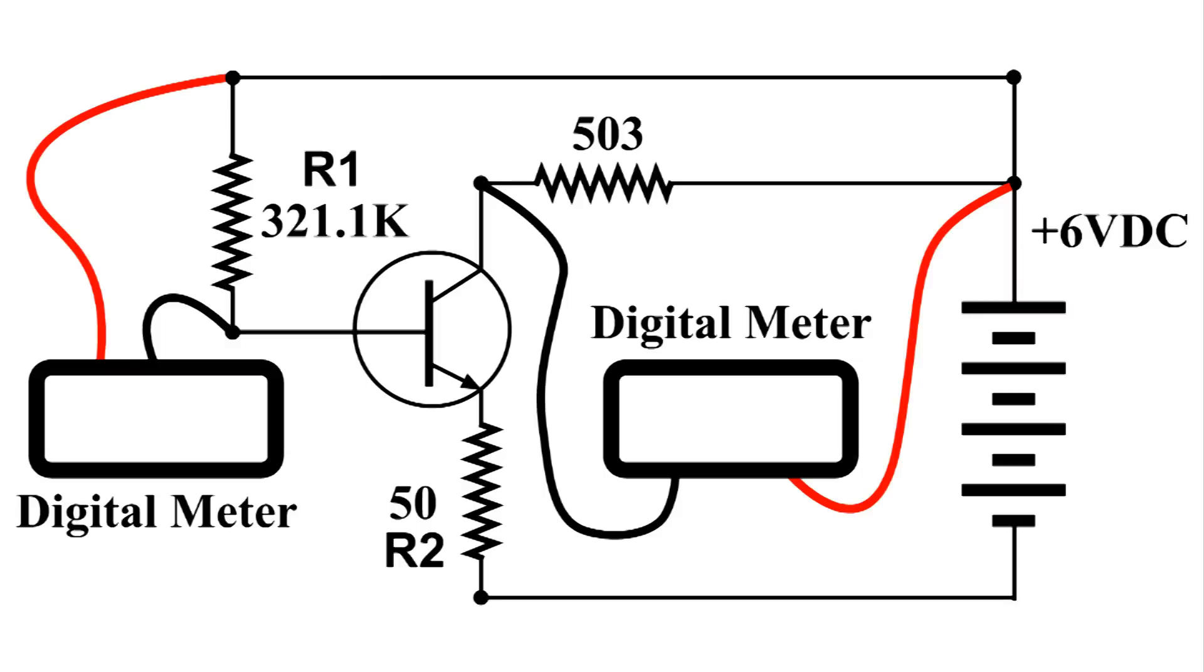What I'm going to do is measure the voltage drop across each resistor and then use Ohm's law to figure out the current through each resistor. The 503 will give me the current for the collector and R1 will give me the current for the base.